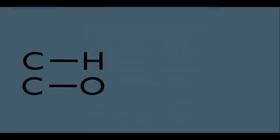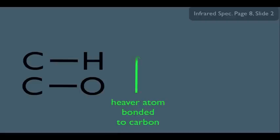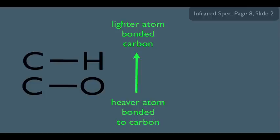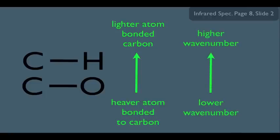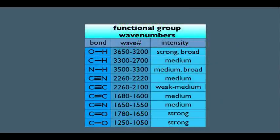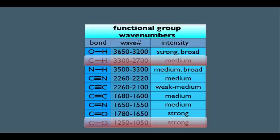Can we predict the relative wavenumbers for a C-O bond compared to a C-H bond? In the C-O bond, carbon is bonded to oxygen, which is a heavier atom than hydrogen. Since mass is inversely proportional to wavenumber, the heavier the atom, the lower the wavenumber, and the lighter the atom, the higher the wavenumber. So we should see the C-H absorption band at a higher wavenumber. And on the wavenumber chart, the C-H bond does indeed appear at a much greater wavenumber than the C-O bond.